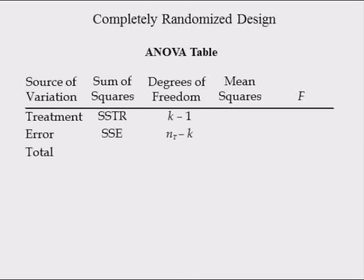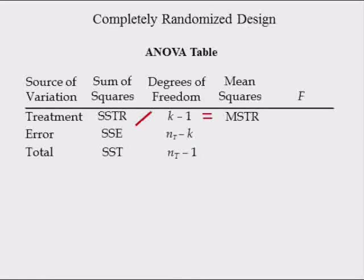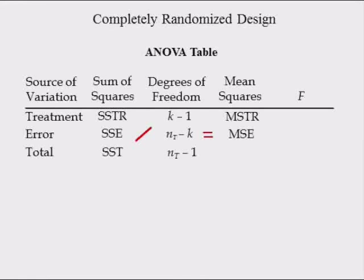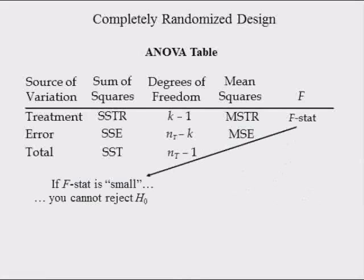After computing the sum of squares due to treatments and sum of squares due to error, the ANOVA table for testing the equality of means is completed by summing the sum of squares due to treatments and errors, summing the numerator and denominator degrees of freedom, dividing SST by numerator degrees of freedom to get MSTR, dividing SSE by denominator degrees of freedom to get MSE, and dividing MSTR by MSE to get the F-statistic. If the F-statistic is big, we reject the null hypothesis that population means are all equal; if small, we cannot reject it.